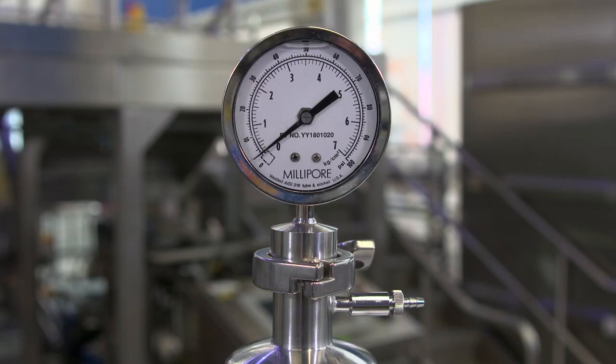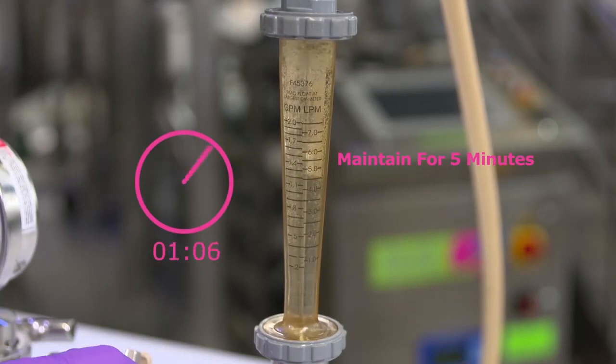For the typical 0.22 micron rated Duraport device, the differential pressure at one liter per minute per 0.1 square meters of filter area will be about 2 to 3 PSID or about 300 millibar. Maintain the flow rate for five minutes.